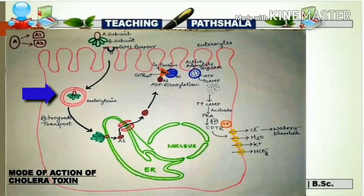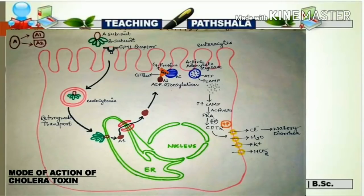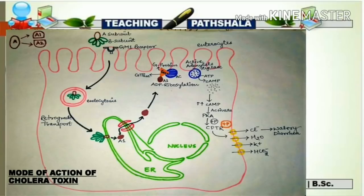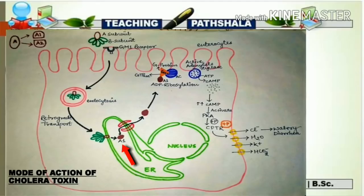After that, endocytosis of the toxin takes place. In the endocytosed form, the overall toxin has both A subunit and B subunit. But for action, the A1 domain should become detached or cleaved from the overall toxin structure. For this process, the overall toxin is transported in a retrograde manner to the endoplasmic reticulum. Retrograde transport means it goes from the Golgi apparatus to the endoplasmic reticulum. The cholera toxin binds with the endoplasmic reticulum and at this point the A1 domain becomes detached from the overall structure.